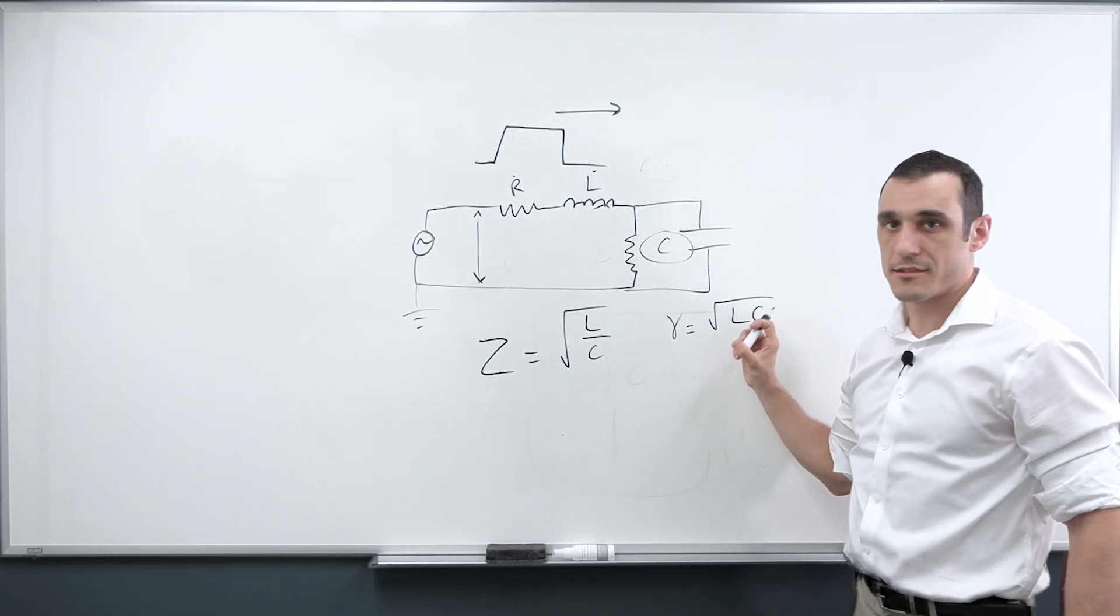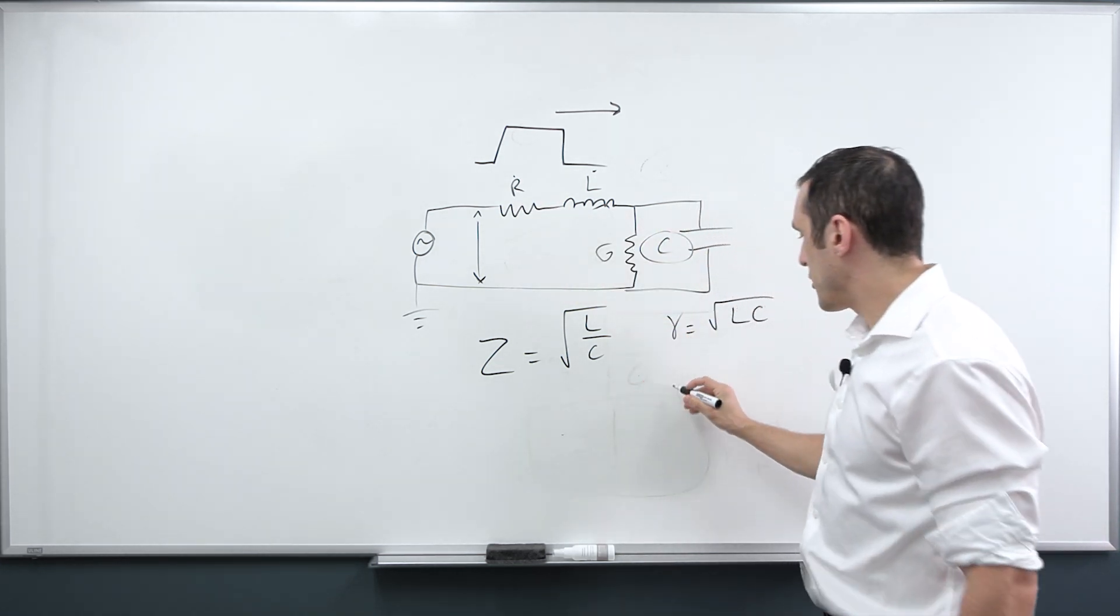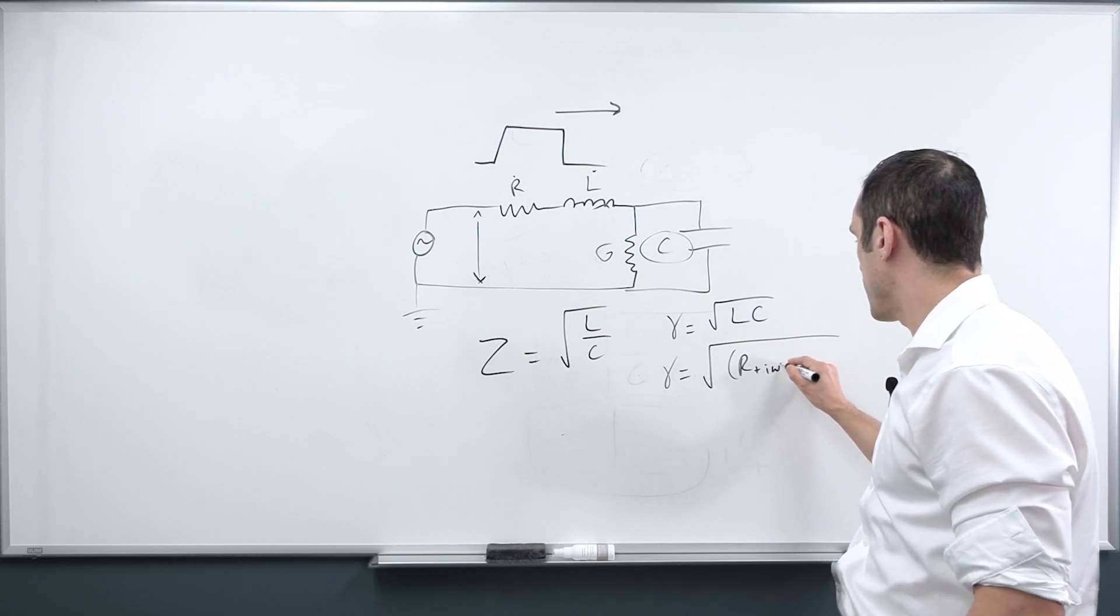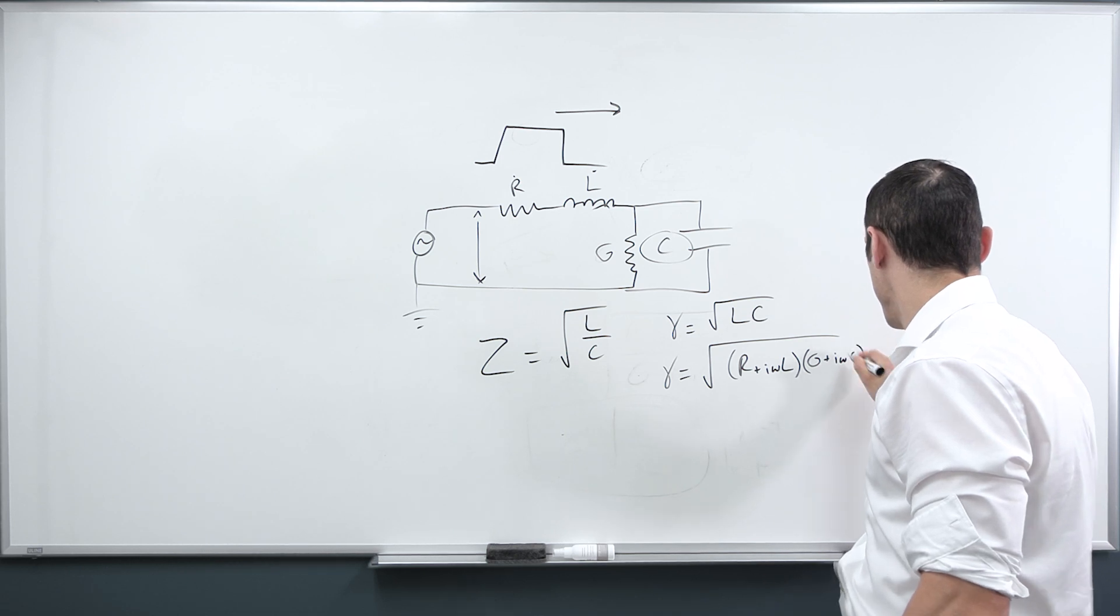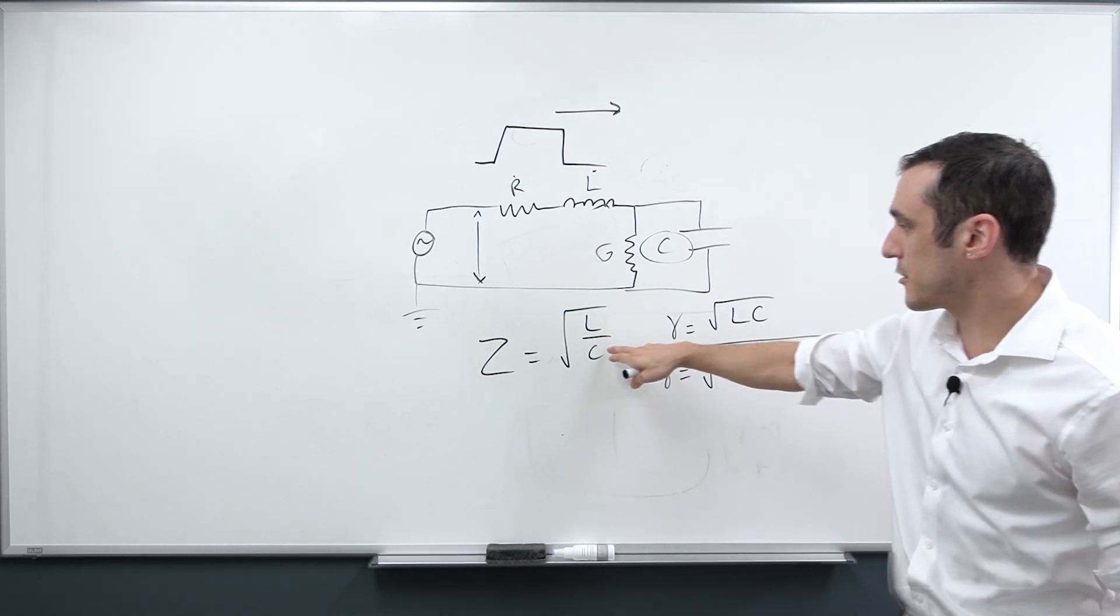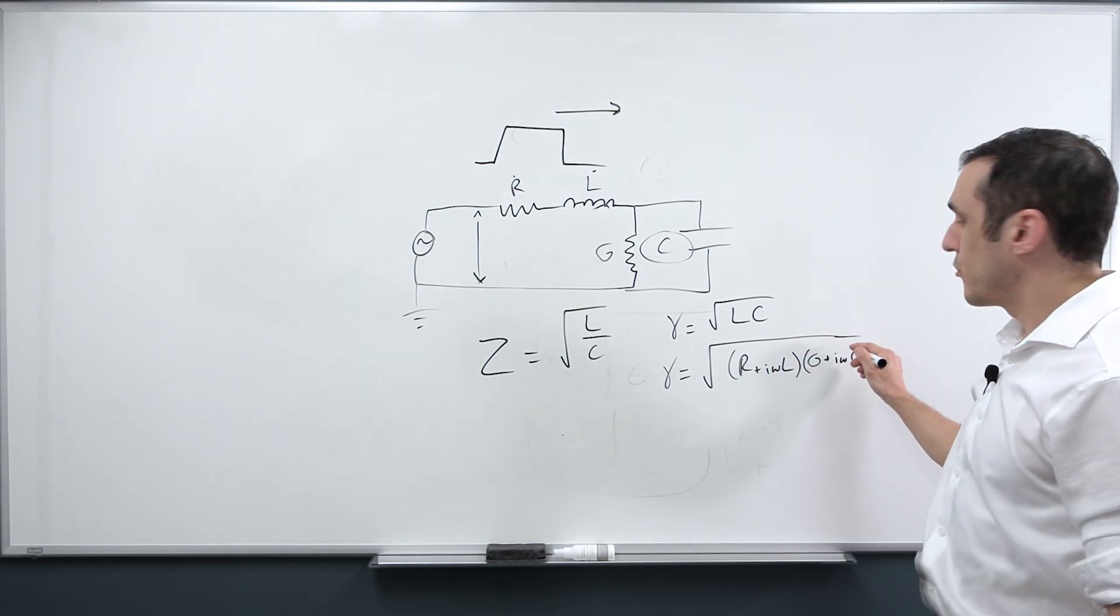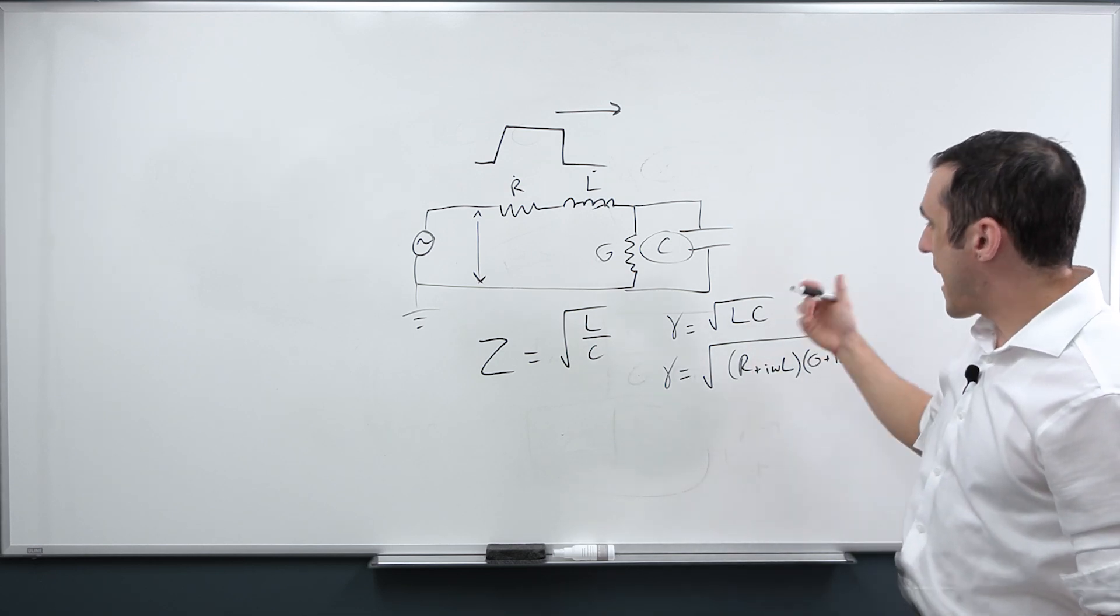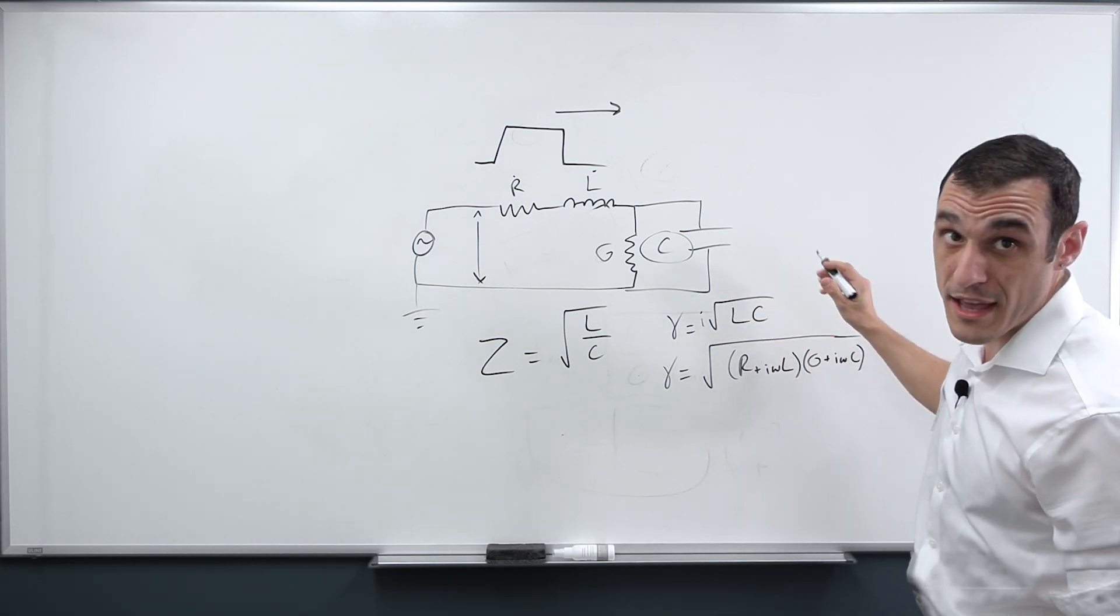Well, we also have what's called a propagation constant for this. And the propagation constant is given by gamma equals square root of LC. And again, this is the lossless case. So we haven't included R, we haven't included our G term here. Now, in reality, what we have is gamma equals square root of R plus jωL times G plus jωC. So hopefully, you can kind of see the pattern here. Remember, we had this in the numerator over here, we had this in the denominator over here. And once you get to very high frequencies, which you actually have is the R and the G cancel out, you don't have to worry about them. And then you get back to this term here. And there should actually be a little j here for the imaginary constant.